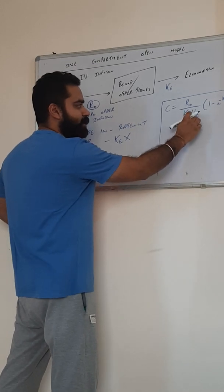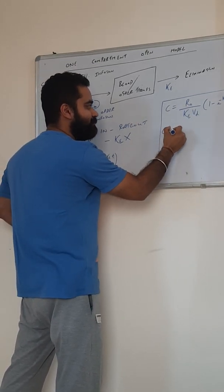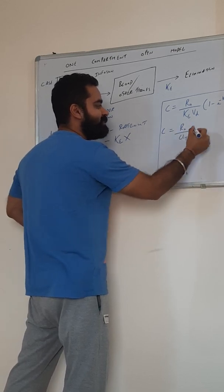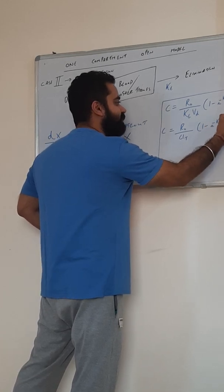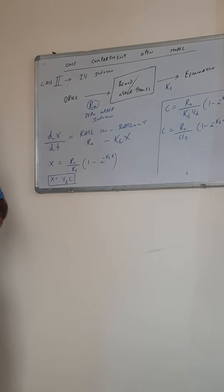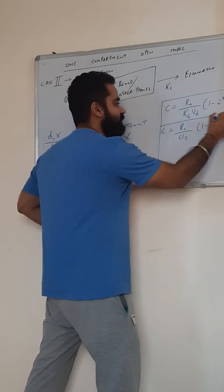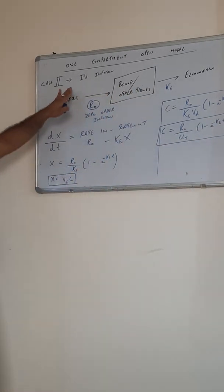As we know, KE into VD, this product is the value of clearance. That is, C becomes R0 by total clearance in brackets, 1 minus KET. So, this becomes a general expression, marking it as equation 1, a general expression for steady state IV infusion.